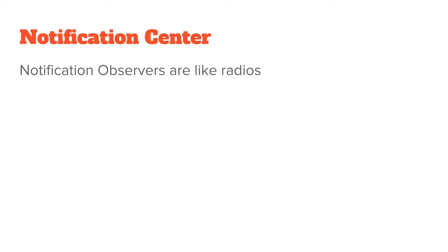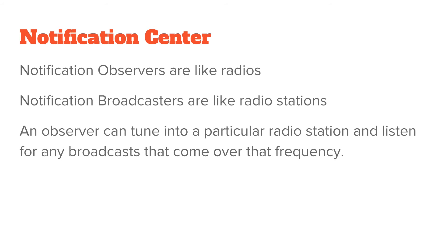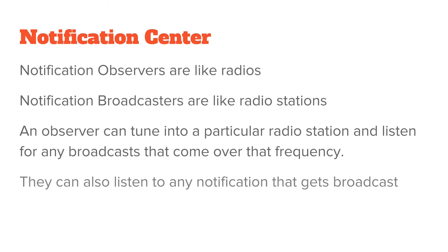You can think of notification observers as radios. These radios are tuning in to the notification, and the notification broadcasters are like radio stations broadcasting out a signal. The observer can tune into a particular radio station and listen for the broadcast — with radios that's a frequency, but in Swift we just say what the notification name is. Same idea, but we talk about names, not frequencies. And they can listen to any notification that gets broadcast.